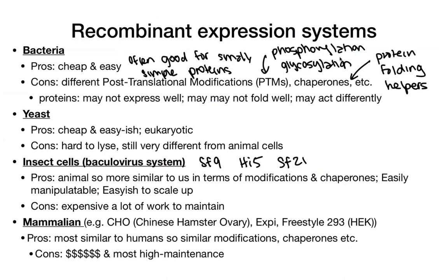For mammalian cells, you might see CHO cells (Chinese hamster ovary) or Expi293/HEK293 cells. These are most similar to humans — similar modifications, similar chaperones — but they're very pricey and high maintenance. To express proteins in them, you typically transfect with lipid reagents or use a viral vector system. You don't need to know all the details — just recognize these when they show up in papers and know that mammalian cells are the most human-like and most expensive option.